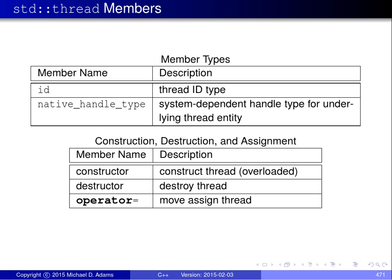This slide and the next summarize the key members of the Thread class. There are two member types: ID, a type used to represent thread IDs; and native_handle_type, a system-dependent handle type. There are constructors, destructors, and assignment operators. The key thing to remember is that Thread objects are movable but not copyable — there is a move constructor and a move assignment operator, but no copy constructor and no copy assignment operator.